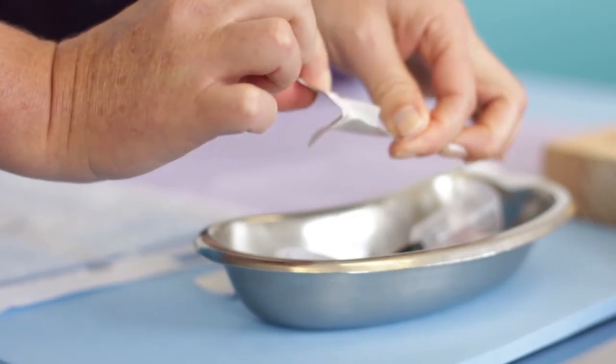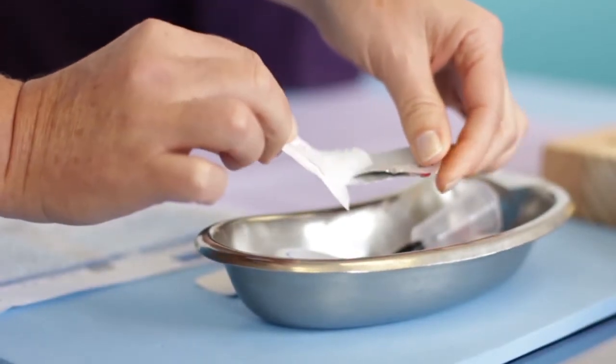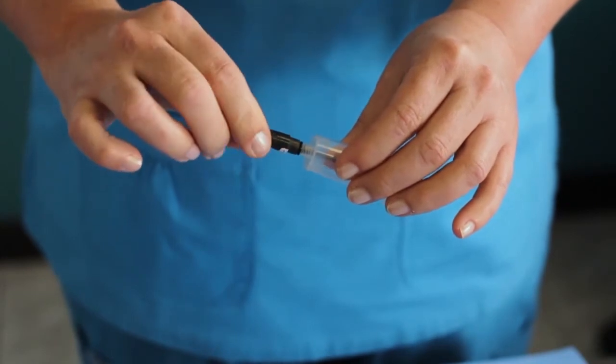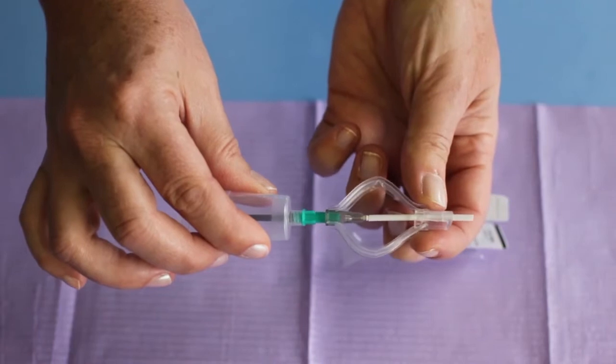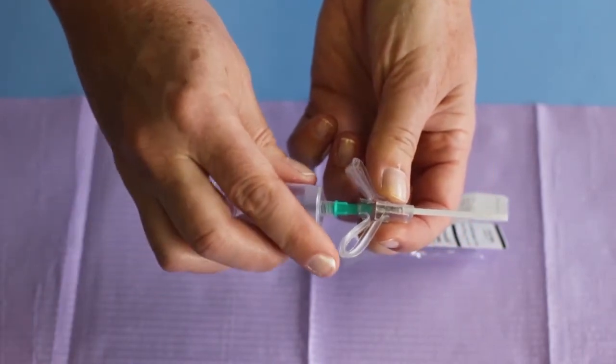Tear open an alcohol prep swab sachet. Attach the vacutainer needle to the vacutainer hub or use the AutoSafe safety vacutainer phlebotomy device, which has a safety needle preassembled to the hub.